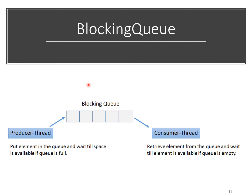BlockingQueues are great. Thinking back to the producer-consumer problem, we previously used wait and notify, which got quite complicated. BlockingQueues simplify the producer-consumer pattern nicely. They are a structure where you can put an element into the queue — unless there's no space, in which case you wait. On the consumer side, you retrieve an item, and if there are no items available, you block.